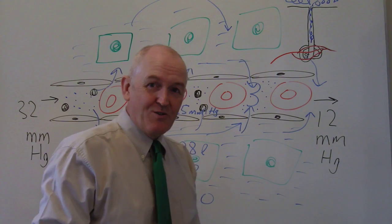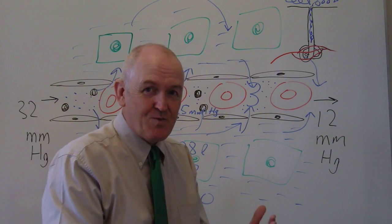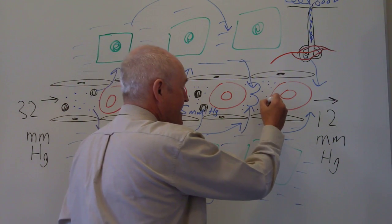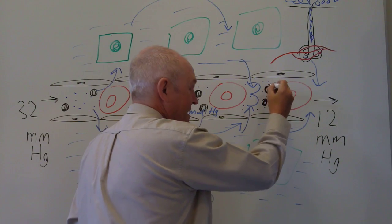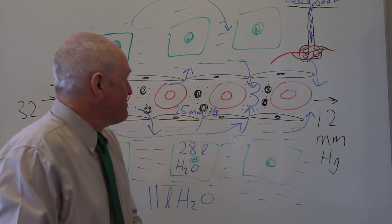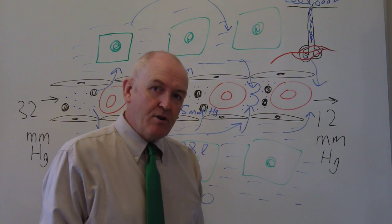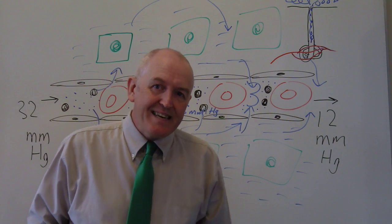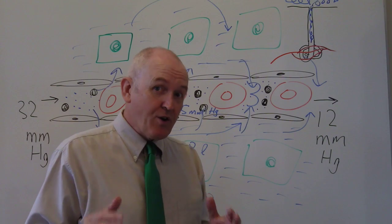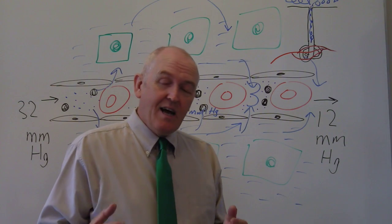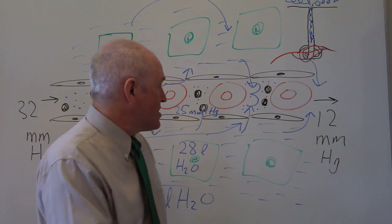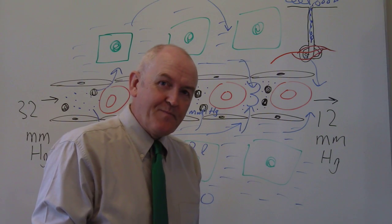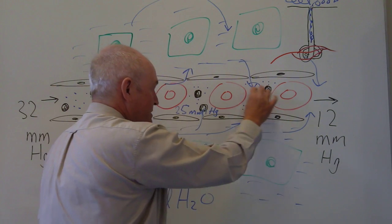We do not sweat plasma protein molecules. The plasma protein molecules don't go from the intravascular compartment into the sweat gland — the plasma protein molecules stay in the plasma where they were to begin with. This means we now have relatively more plasma protein molecules compared to the amount of water molecules. The total amount of plasma proteins remains the same, but there's less water, so the plasma proteins are going to be more concentrated.